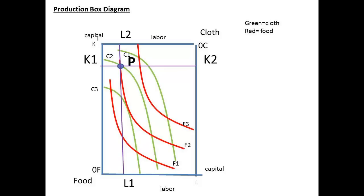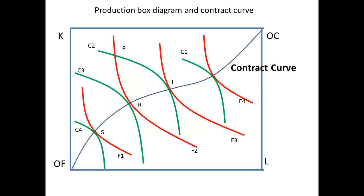Although P is a possible production point, is it an efficient one? There must be an infinite number of points where food isoquants are tangent to cloth isoquants. We have shown a number of these, and have joined the points with a line. The line joining all the tangency points is called the contract curve. It is all the points on the contract curve that are technically efficient, and the points such as P, which do not lie on the curve, are technically inefficient.